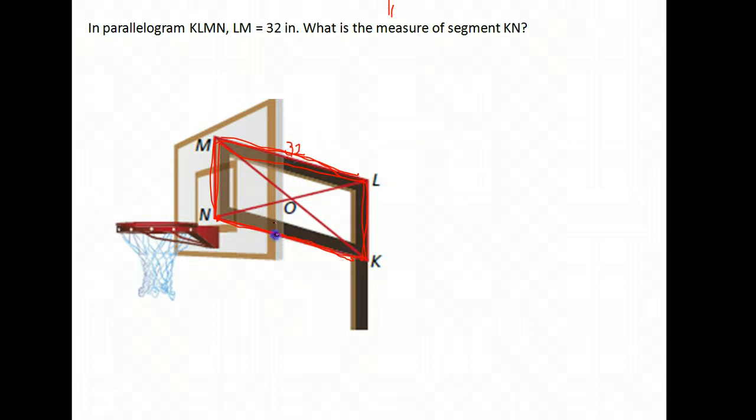Well, notice those are opposite sides of a parallelogram. And what was the property about opposite sides? They're congruent. So if ML is 32, NK is also 32.